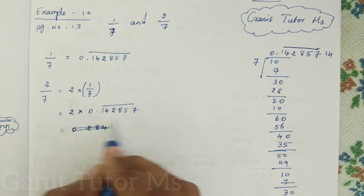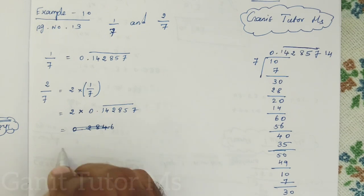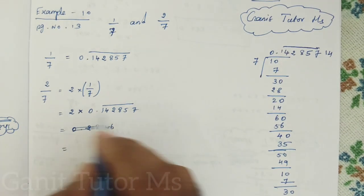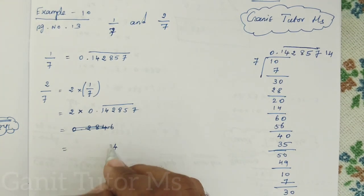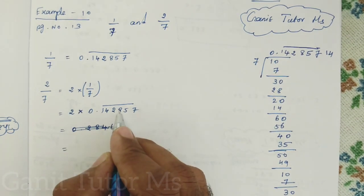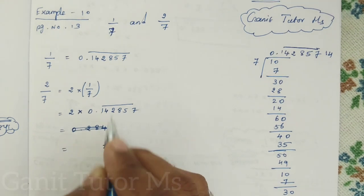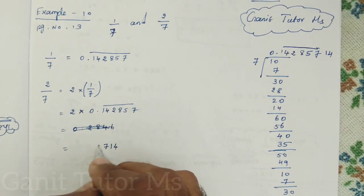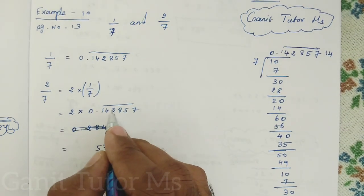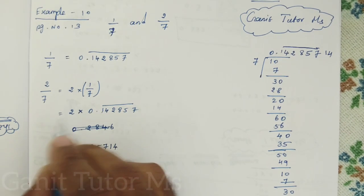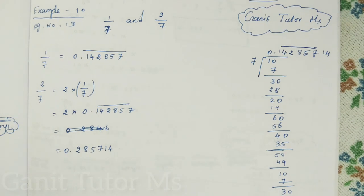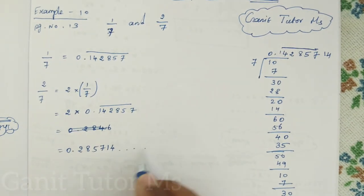Multiply this 2 into the whole decimal number. So what it is? Back side number is to multiply. 2 sevens are 14. So 4 remaining 1. 2 fives are 10, 10 plus 1, 11 remaining 1. 2 eights are 16, 16 plus 1 is 17 remaining 1. 2 twos are 4, 4 plus 1, 5. Then 2 fours are 8. 1 twos are 2. Then dot 2 0 0. So we find out the number.